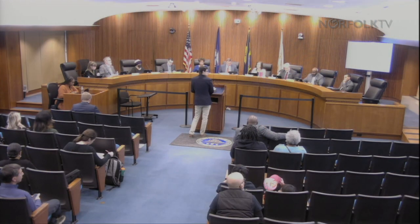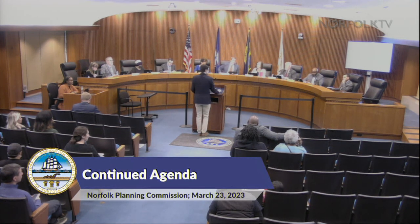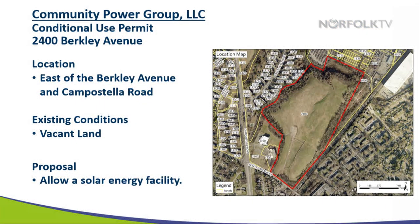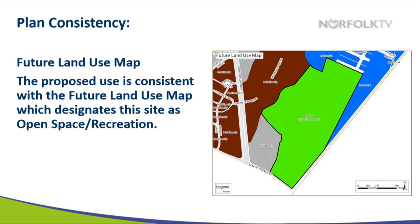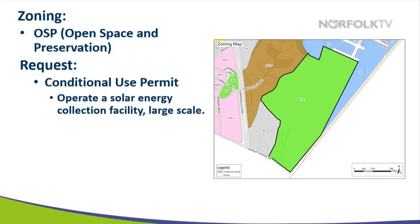First item on the continued agenda is Community Power Group, LLC, for a conditional use permit at 2400 Berkeley Avenue to operate a solar energy collection facility, large scale. The purpose of the request is to allow a solar energy facility. This property is the old Campostella Landfill, east of Berkeley Avenue and Campostella Road. The future land use map designates the site as open space and recreation, and this use would comply with that. It is currently zoned open space preservation, and a solar energy collection facility, large scale, requires a conditional use permit to operate here. That was done as a result of a zoning text amendment passed in 2022.